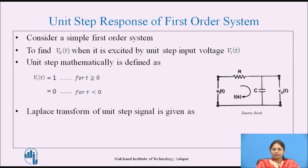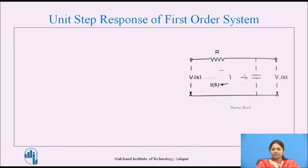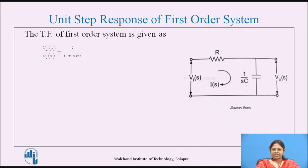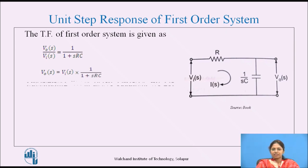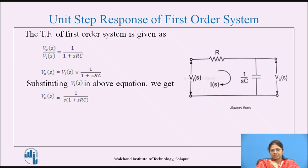The Laplace transform of the unit step signal is given as V_I(s) = 1/s. The transfer function of the first order system is V_O(s)/V_I(s) = 1/(1 + s·RC). This equation is rewritten as V_O(s) = V_I(s) · 1/(1 + s·RC). Substituting V_I(s) = 1/s for the step input, we get V_O(s) = 1 / [s·(1 + s·RC)].